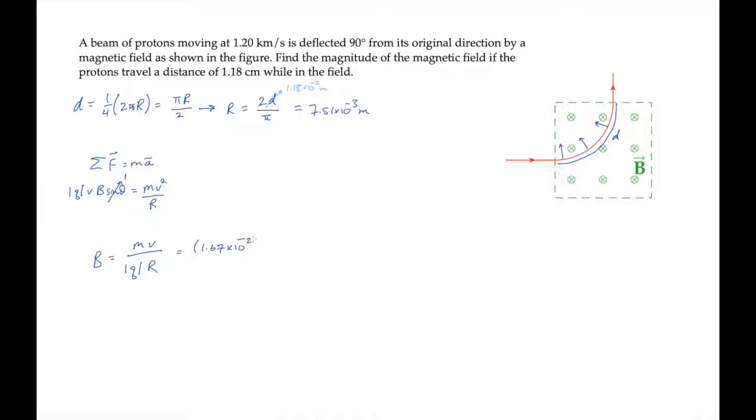The proton's mass, its speed, the magnitude of its charge, and the radius of its curved path. Calculating to find the magnetic field magnitude is 1.67 times 10 to the minus 3 tesla.